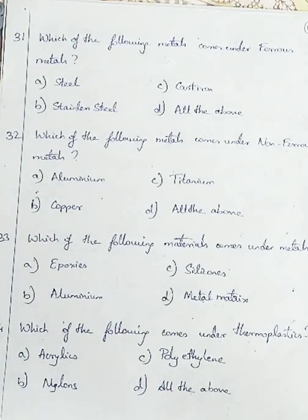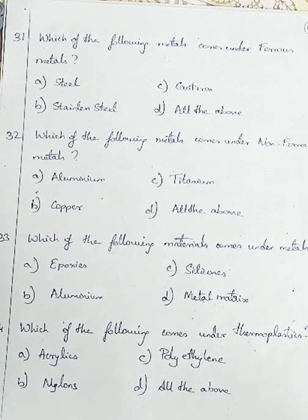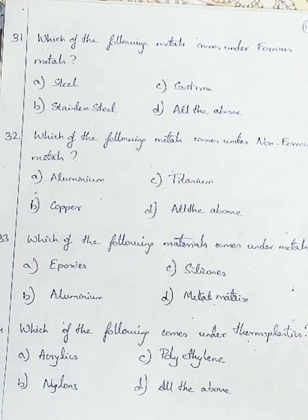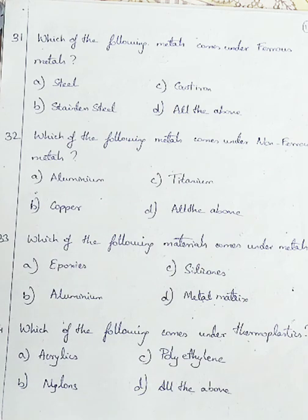Question 31: which of the following materials comes under ferrous metals? Ferrous metals are metals having iron as their basic constituent. Option A: steel, Option B: stainless steel, Option C: cast iron. Steel, stainless steel, and cast iron all have iron as their basic constituent. So we will go with Option D, all the above.